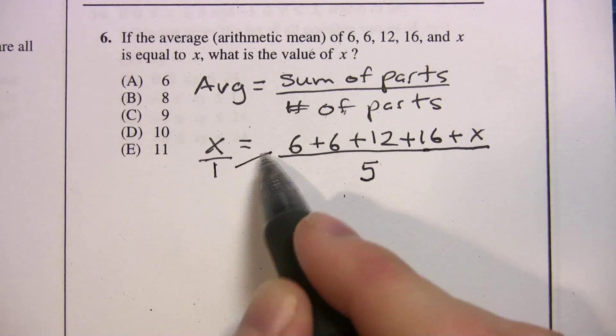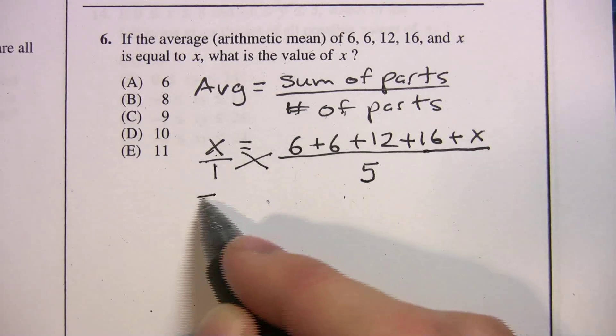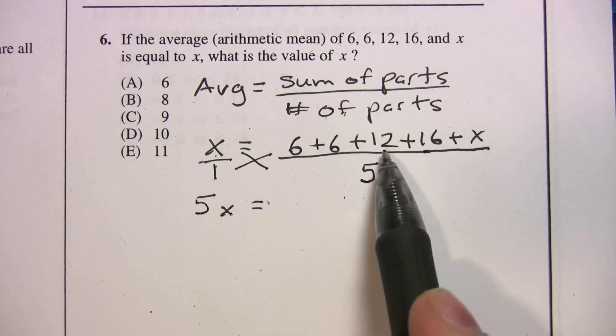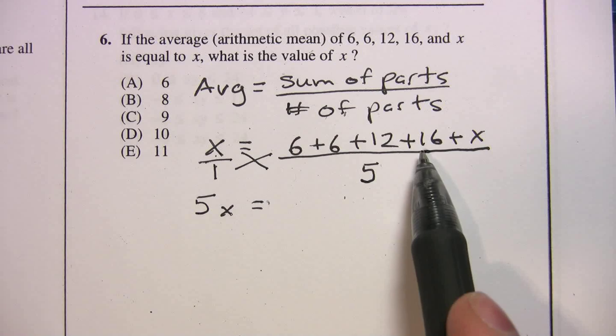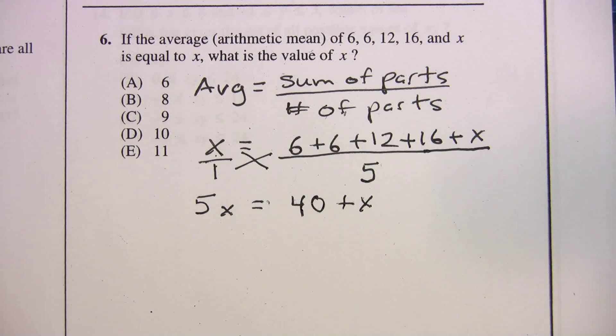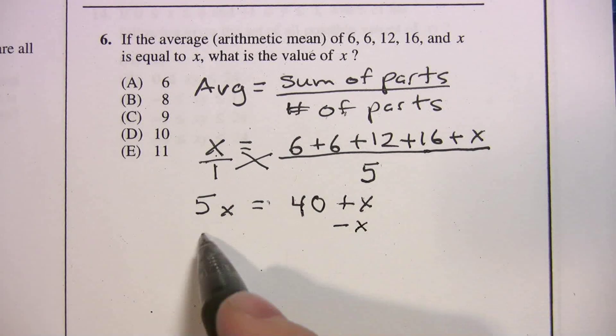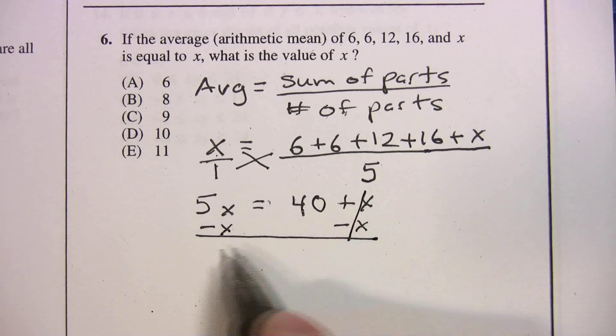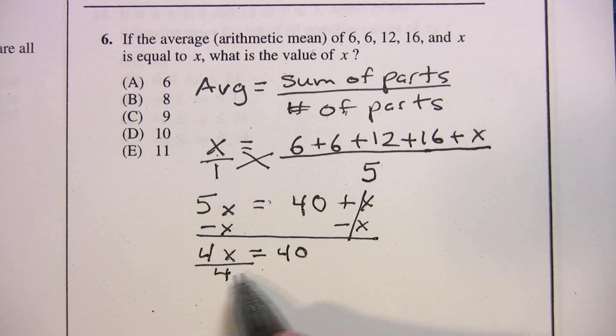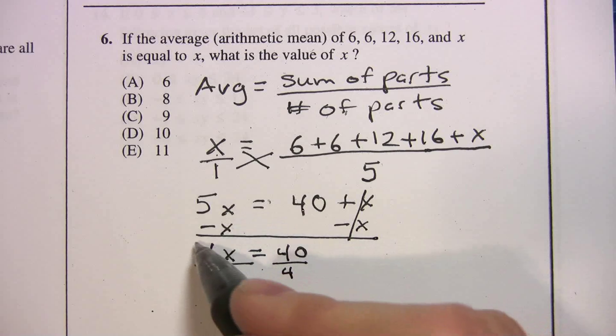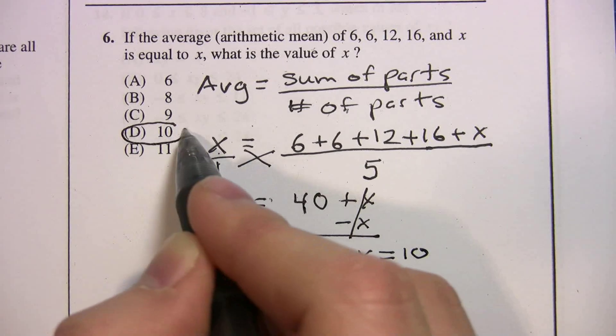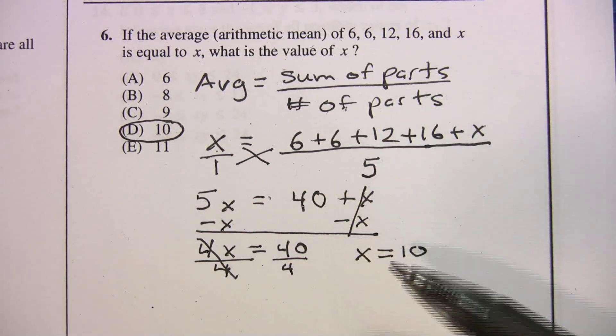All right, so at this point, you cross-multiply. So x times 5, we get 5x. We're going to add up all this. 6 plus 6 is 12. 12 plus 12, 24. 24 plus 16, 40 plus x. So we've cross-multiplied. Now let's solve for x. We'll minus an x from both sides. And we get 4x equals 40. Divide by 4. These cross out. And we get x equals 10. Choice D.